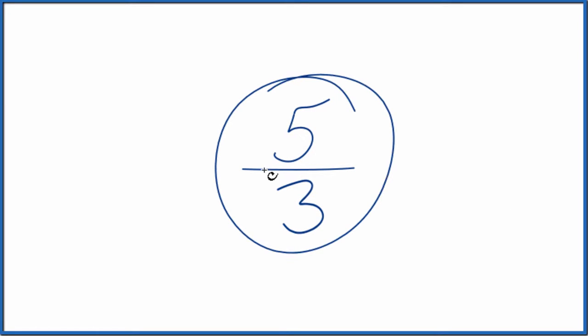Let's write 5 thirds as a mixed number, also called an improper fraction. So 5 thirds, here's how we do it.